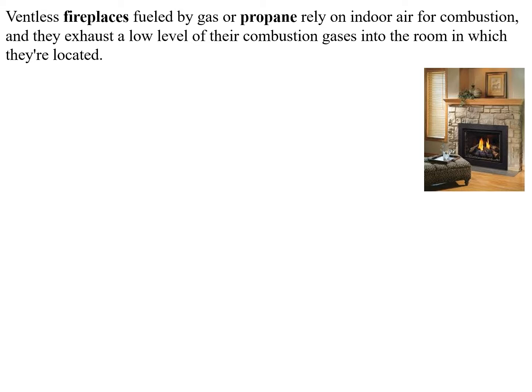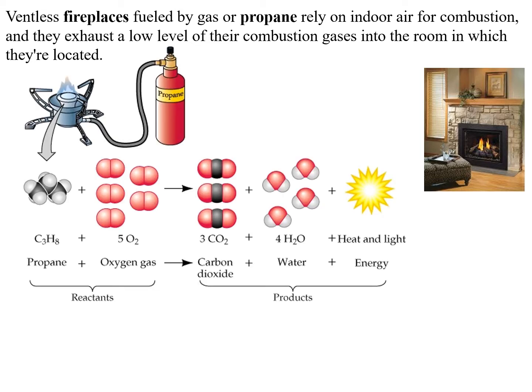In chemistry, we write a chemical equation to describe this. It's like learning a new language where you have to understand the spelling rules — how to write the formulas — and the grammar rules — how to write the equation. This shows how we can describe the combustion of propane in chemistry terms. We have the formulas for the two reacting substances: propane, a compound of carbon and hydrogen called a hydrocarbon, and oxygen. Those two are the reactants — our starting point, like the ingredients in cooking.